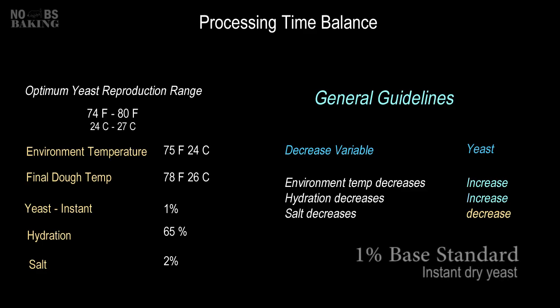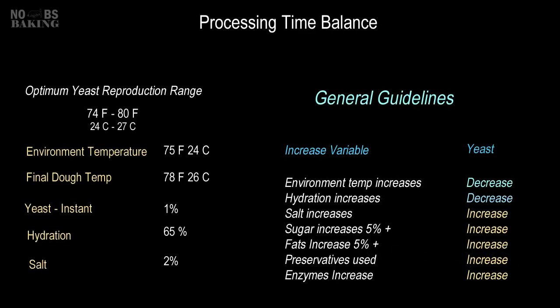So if 1% is the common yeast standard and variables are injected into the equation — like a cooler kitchen, needing to make a really stiff dough, or wanting to reduce salt significantly — then note the yeast adjustments that may be required. And likewise, if things are increased in your recipe plan, yeast adjustments may also be needed.